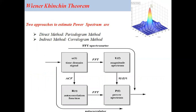There are two approaches to estimate the power spectrum. One is called the direct method, which is also called the periodogram method, and the second one is called the indirect method, which is called the correlogram method.